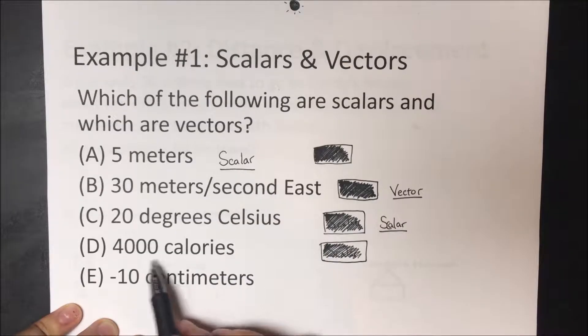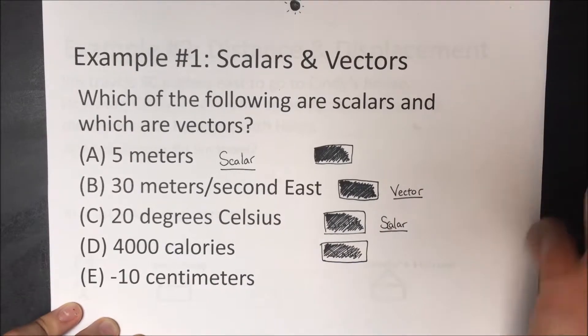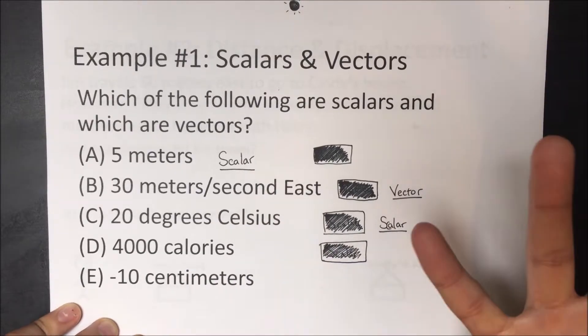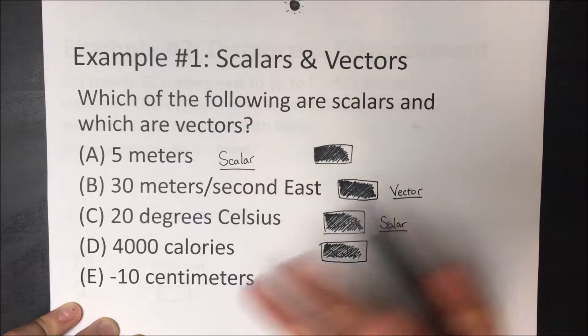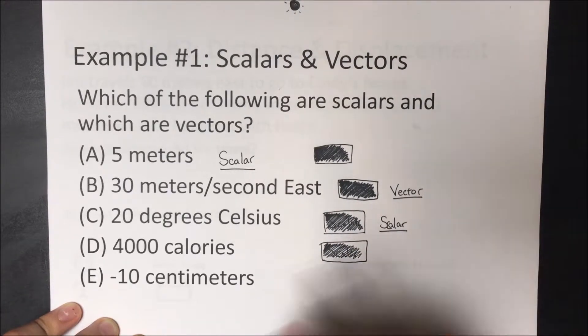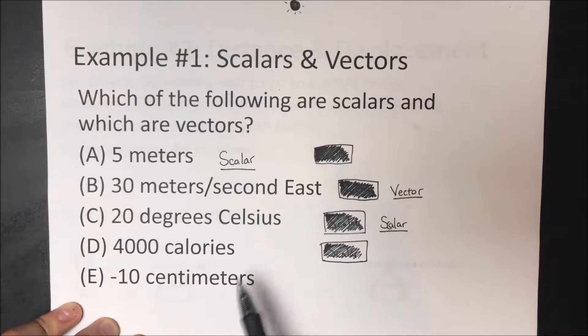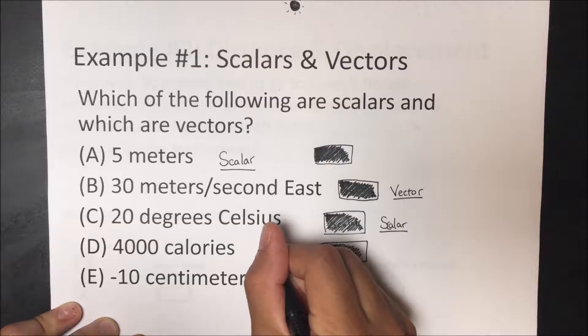4,000 calories. We might think big or small, but again, there's no direction when it comes to calories — it is just a certain amount of quantity. So this is a scalar.